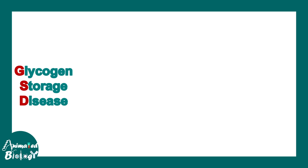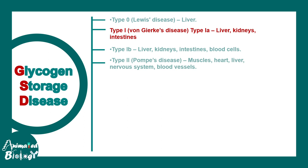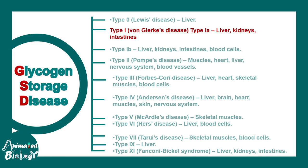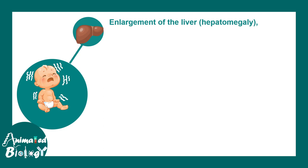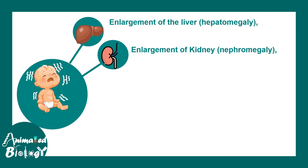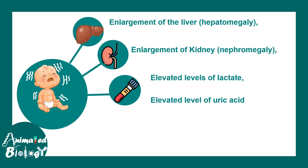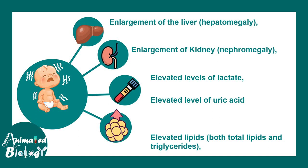Glycogen storage disorders can be subclassified into many categories: type 0, type 1, type 1b, type 2, type 3, type 4, and so on. Von Gierke's disease is type 1a glycogen storage disorder and generally affects the liver, kidneys, and intestine. Enlargement of the liver, hepatomegaly, and enlargement of the kidney, nephromegaly, are prominent findings. Biomarkers such as elevated lactate levels, elevated uric acid levels, and elevated triglyceride levels or dyslipidemia are also prominent in these patients.